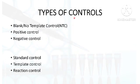What are the different types of controls? Blank or no template control, positive control, and negative control — these three types of controls we use regularly in molecular labs. There are other types of controls which can also be used based on your type of PCR reaction: standard controls, template controls, and reaction controls.